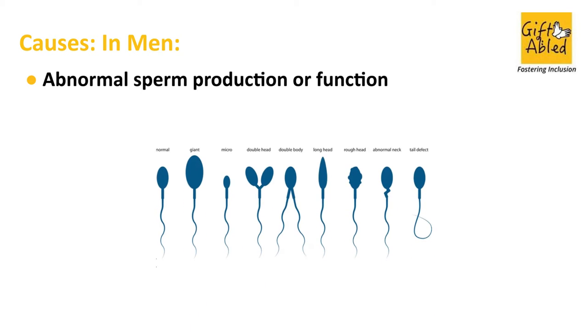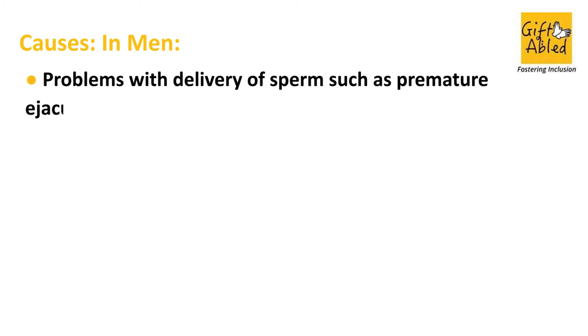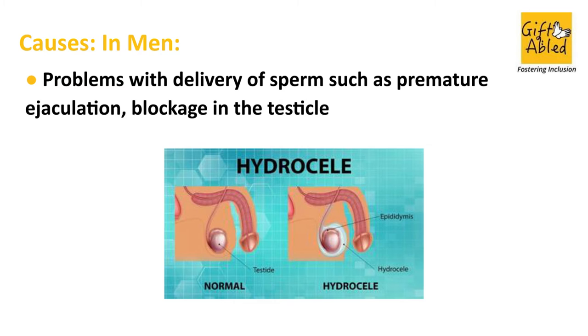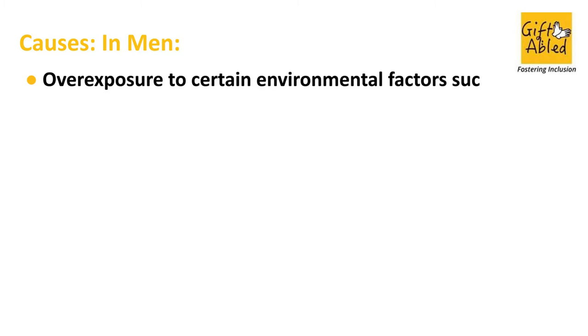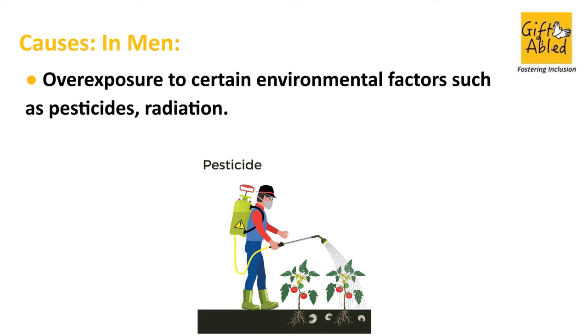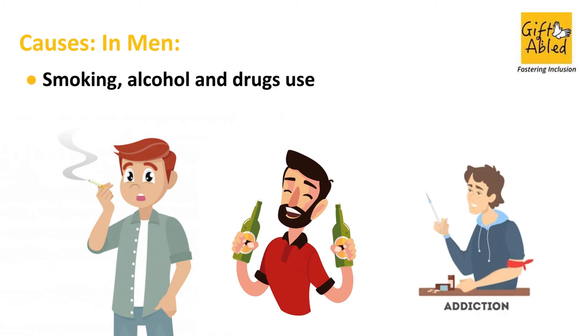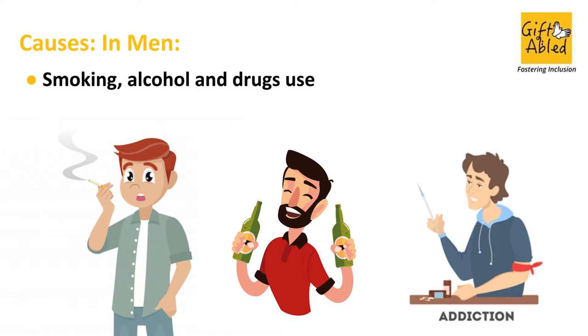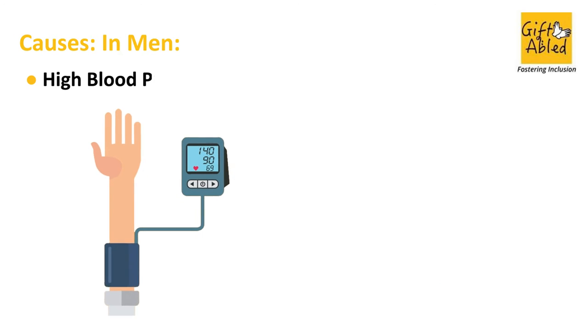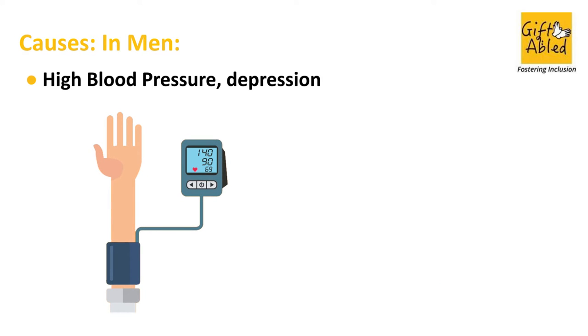Causes in men: abnormal sperm production or function; problems with delivery of sperm such as premature ejaculation or blockage in the testicle; overexposure to certain environmental factors such as pesticides, radiation, smoking, alcohol, and drug use; high blood pressure; and depression.